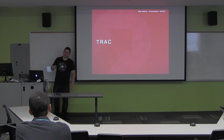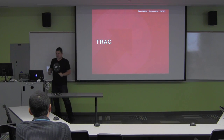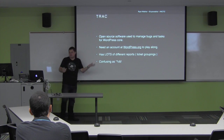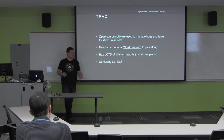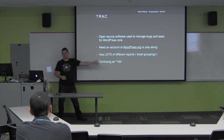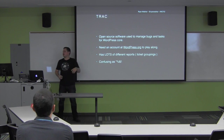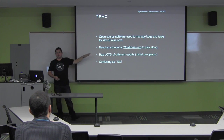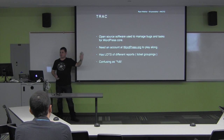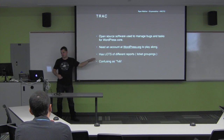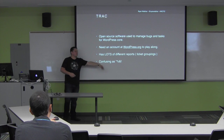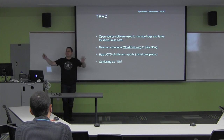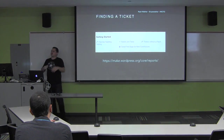Let's talk about Track. Track is open-source software used to manage the bugs and tasks of WordPress core. The version they're running has been heavily modified, but it's still Track. You need a wordpress.org account to do anything with Track — even just to submit a ticket, add a comment, anything. It has lots of different reports, which are groupings of tickets. Because of that, it's confusing, because there are so many places to go that you don't know where to start.